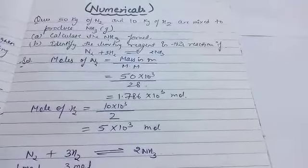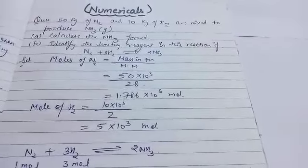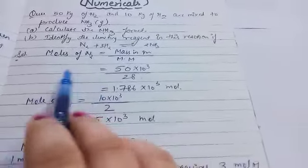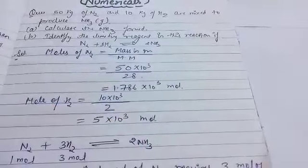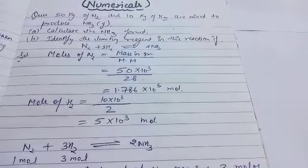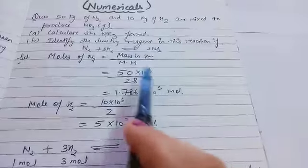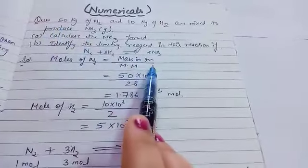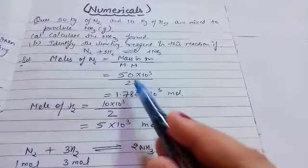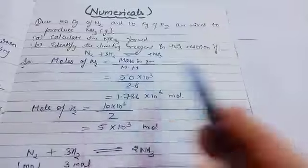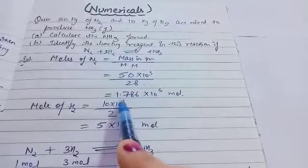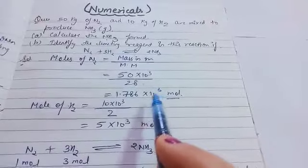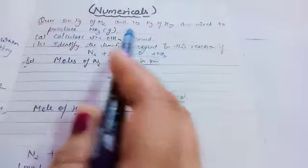Now calculate the actual number of moles present. First, moles of nitrogen = given mass in grams ÷ molar mass. The given mass is 50 kg, which we convert to grams by multiplying by 1000. Molar mass of N₂ = 14 × 2 = 28. So moles of N₂ = 50,000 ÷ 28 = 1.786 × 10³ mol. This is the actual number of moles of nitrogen reacting.